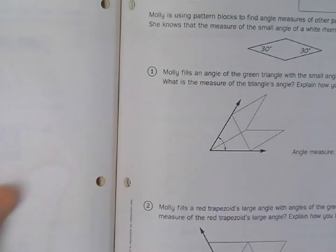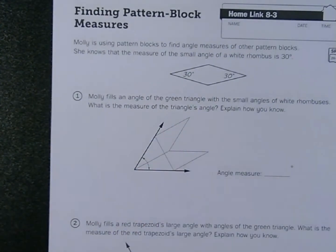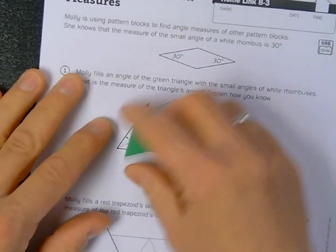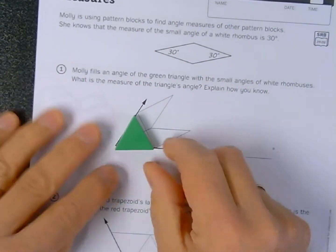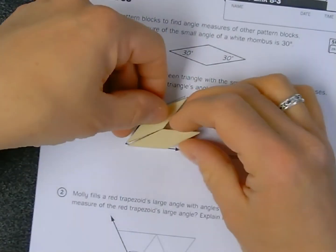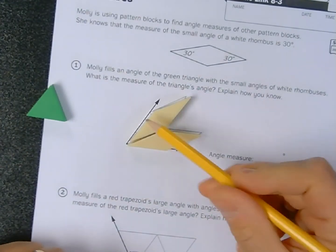I'm going to switch to this photocopied version of my home links so everything lays down flat. This green triangle occupies the same space as these two white rhombuses.